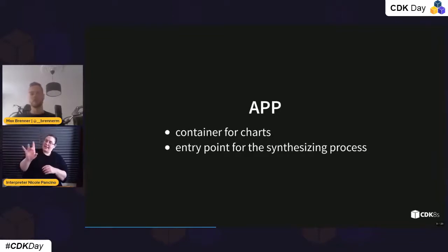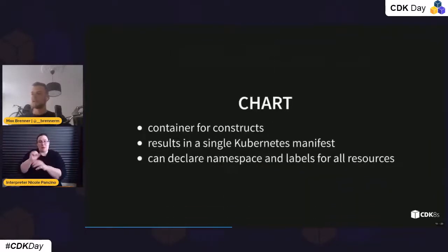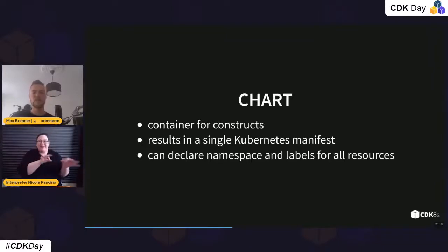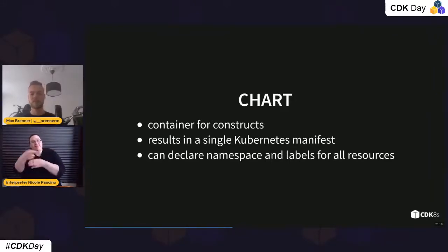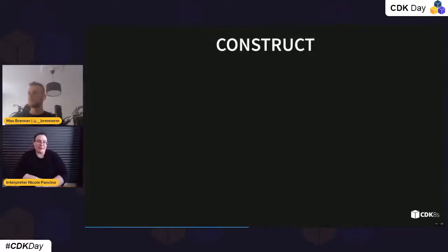Going over the concepts of CDKs. First, the App: it's a container for one or multiple Charts and is the entry point for synthesizing. You can configure things like the output directory where synthesized files are placed. Then there are Charts — don't confuse them with Helm charts, they're similar but different. Charts are containers for constructs, and importantly, a single Chart always results in a single Kubernetes manifest file. You can also declare global values here, like the Kubernetes namespace or labels.